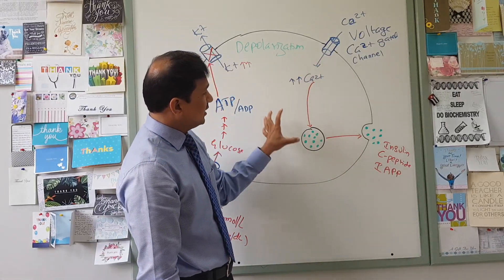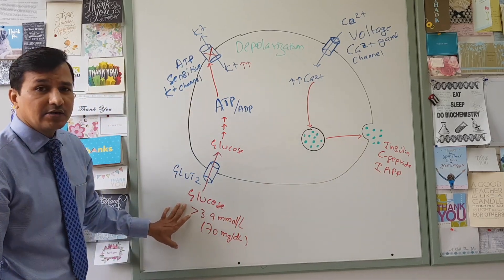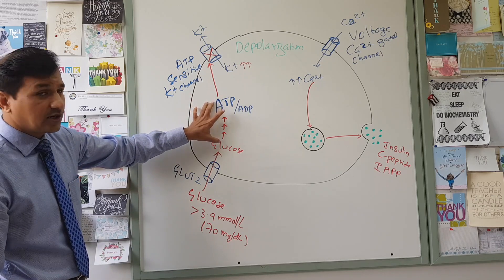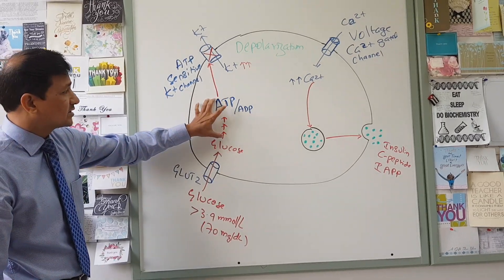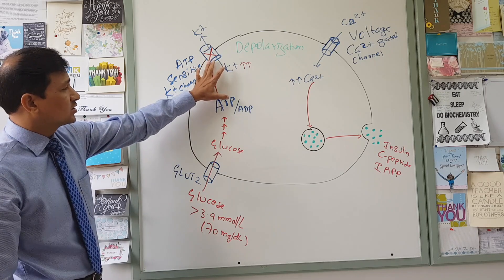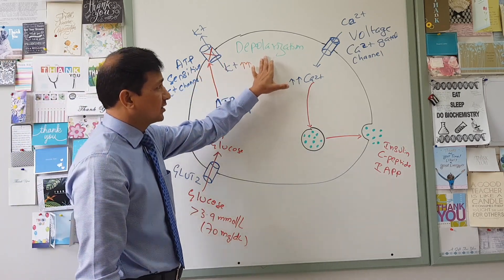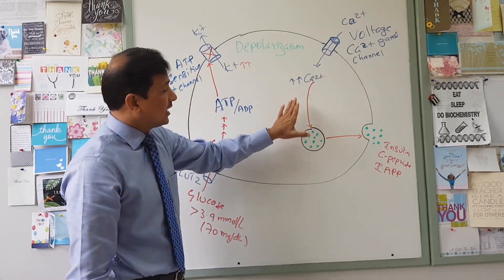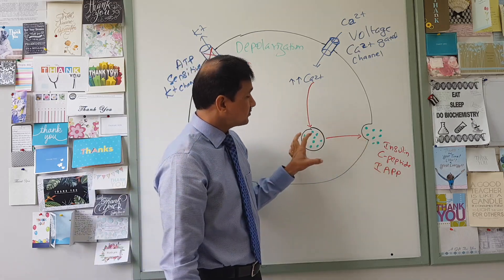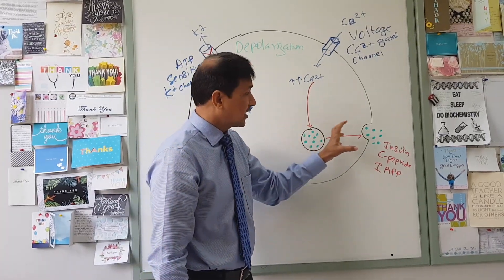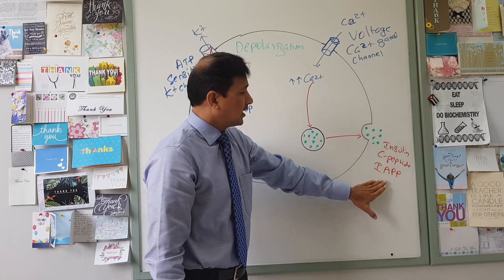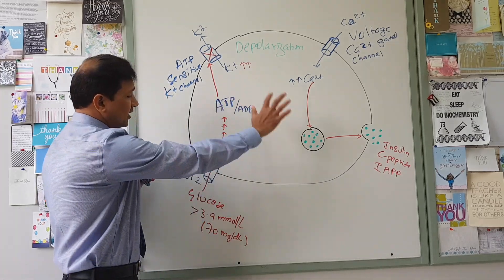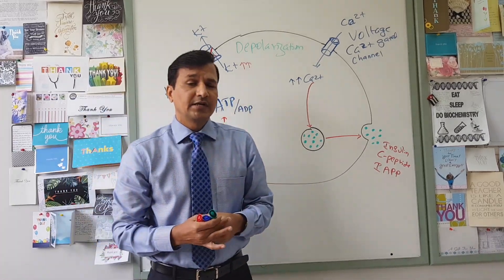To summarize, this is how insulin is released in response to elevated glucose: glucose enters, glycolysis occurs, glucose is completely broken down into carbon dioxide, ATP levels increase, the ATP-sensitive potassium channel is closed, membrane depolarization occurs, the voltage-gated calcium channel opens, calcium levels increase, and calcium moves secretory granules causing exocytosis of insulin, C-peptide, and islet amyloid polypeptide.